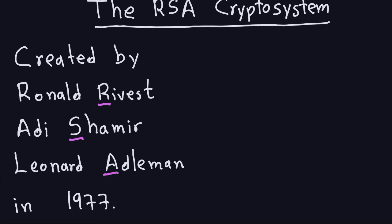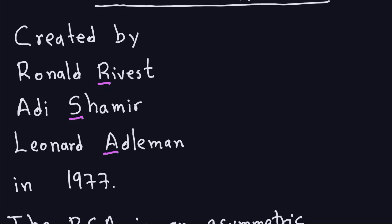The RSA was created by Ronald Rivest, Adi Shamir, and Leonard Adleman. The name RSA comes from the last names of these creators, and it was created in 1977.